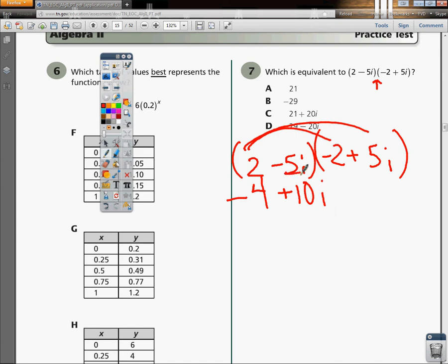Then I want to do my insides, so it's negative 5i times negative 2, which gives me plus 10i again. And then finally, I have negative 5i times 5i, which gives you negative 25i squared.